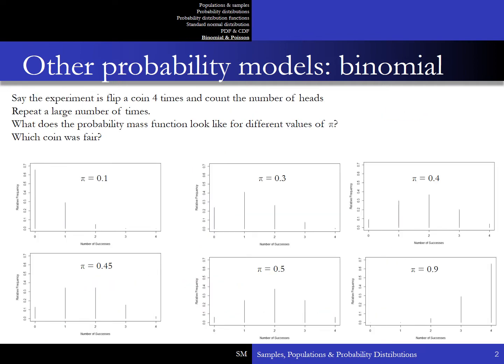Say the experiment is to flip a coin four times and count the number of heads, and we repeat this a large number of times. What does the probability mass function look like for different values of pi — different values of the population proportion? Let's imagine that each of the six graphs represents six different coins that we toss, but only one of these coins is fair. Which one is it?